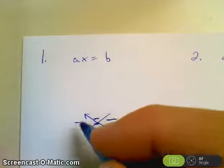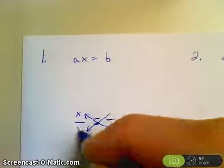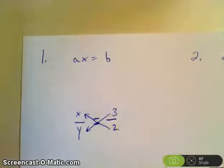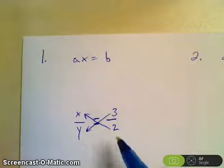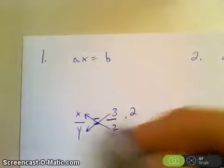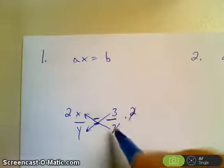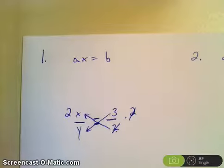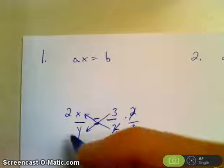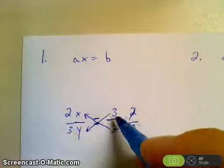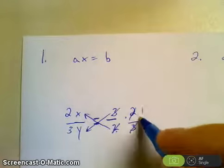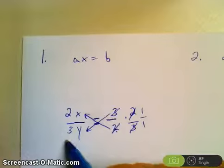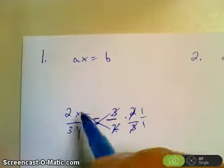So say, for example, that I have x over y equals 3 over 2, something like that. Well, if I multiply both sides by 2, 2 goes from the denominator here up to the numerator here. And if I divide both sides by 3, if you notice, the 3's cancel, leaving you with 1.